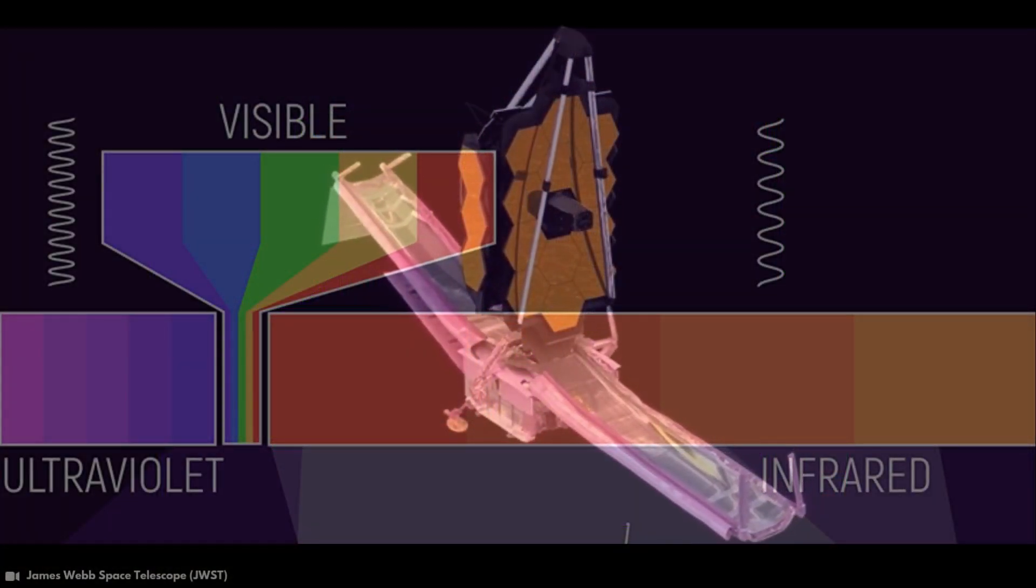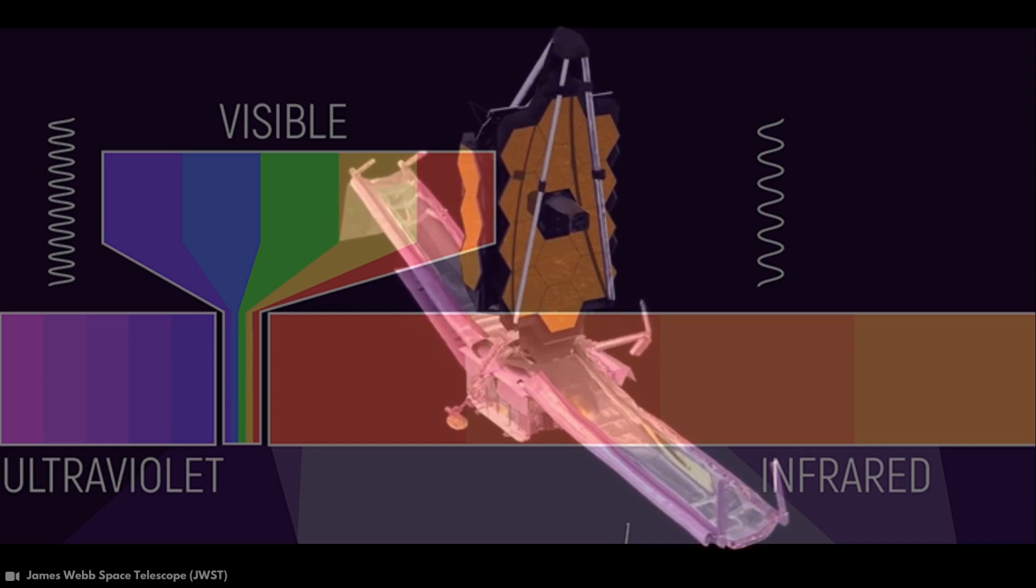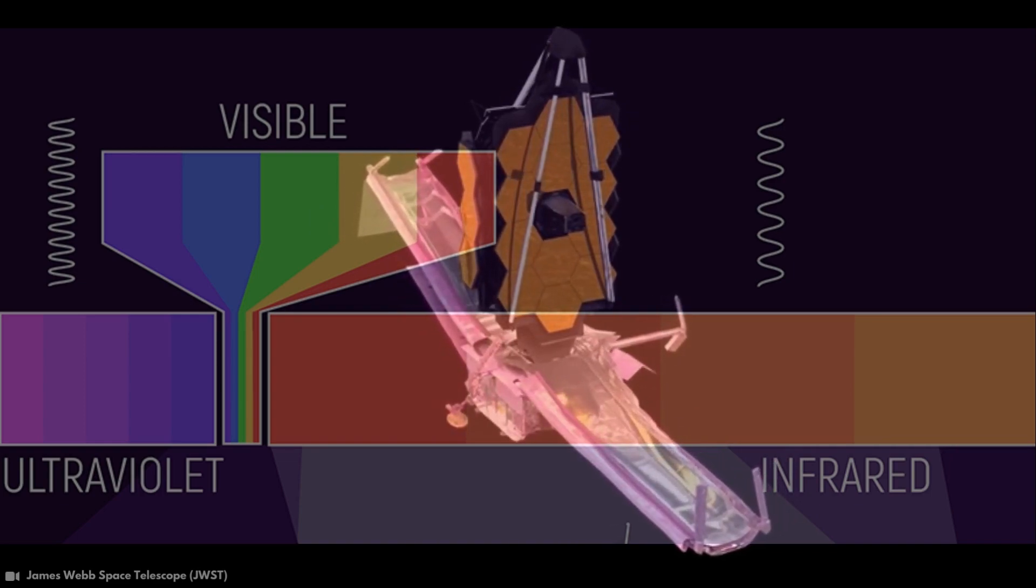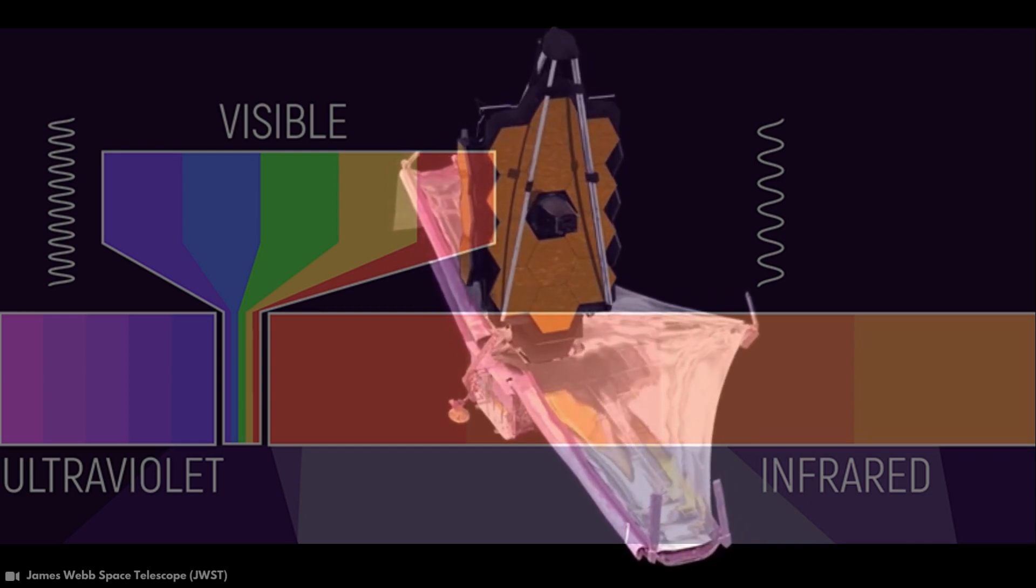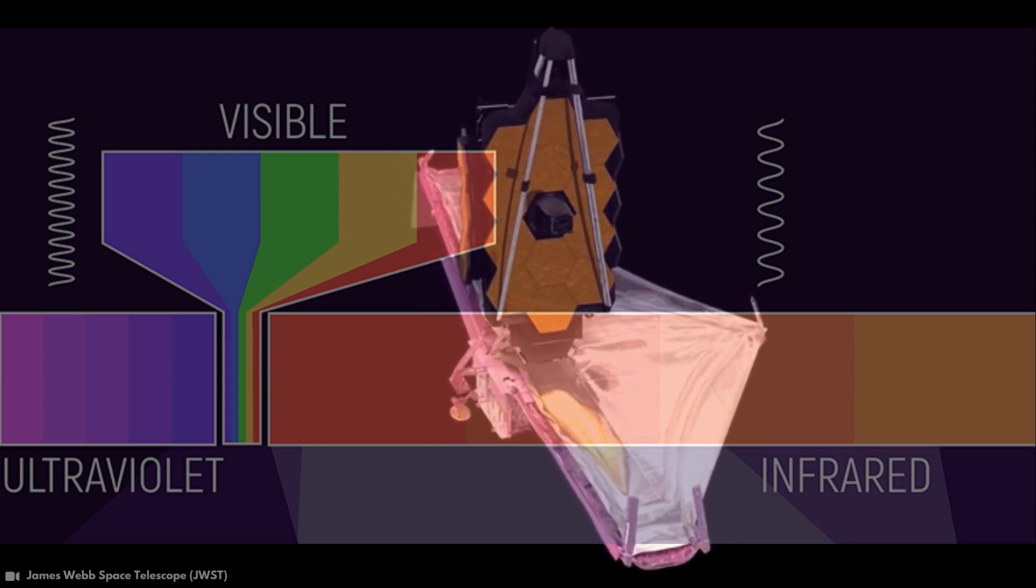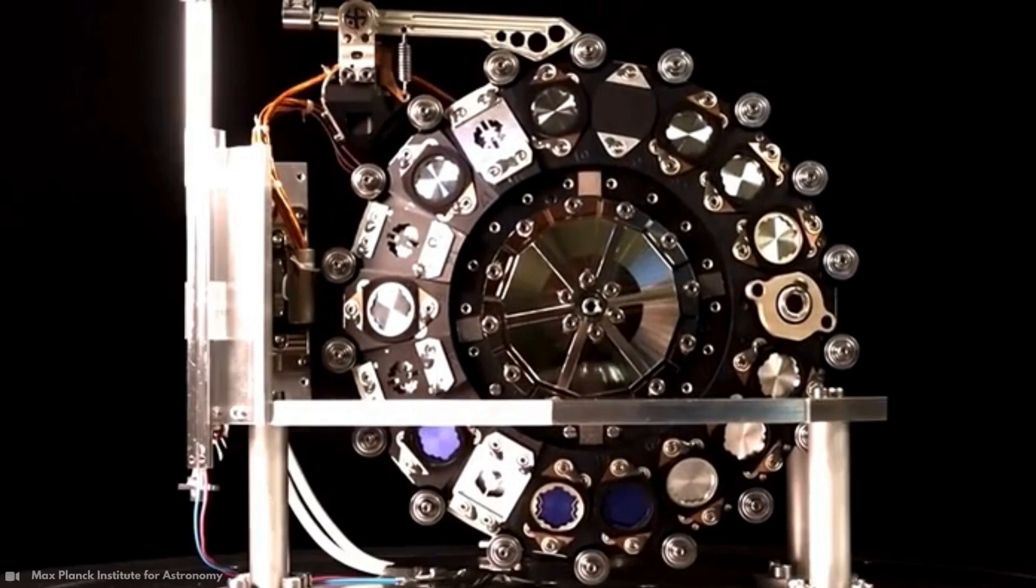Also, our eyes are not as sensitive to light as telescopes. The advanced instruments of the telescope present these cosmic objects in a more realistic and detailed way than we can see with our observations.